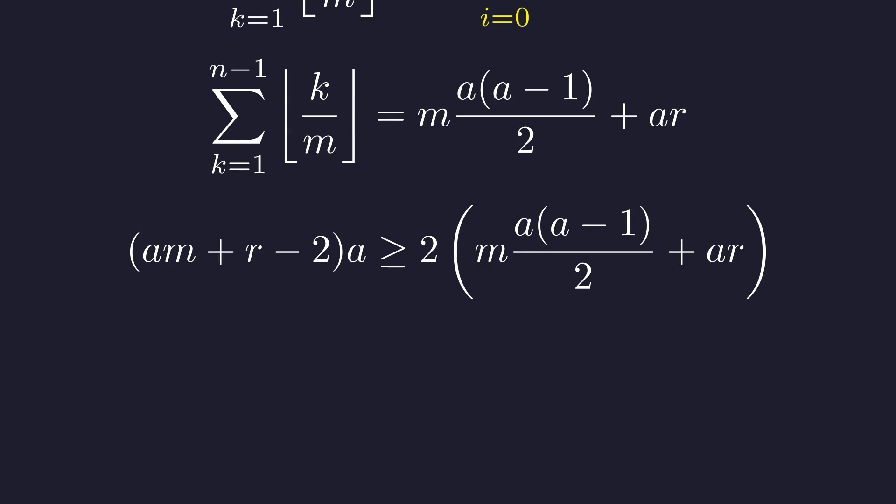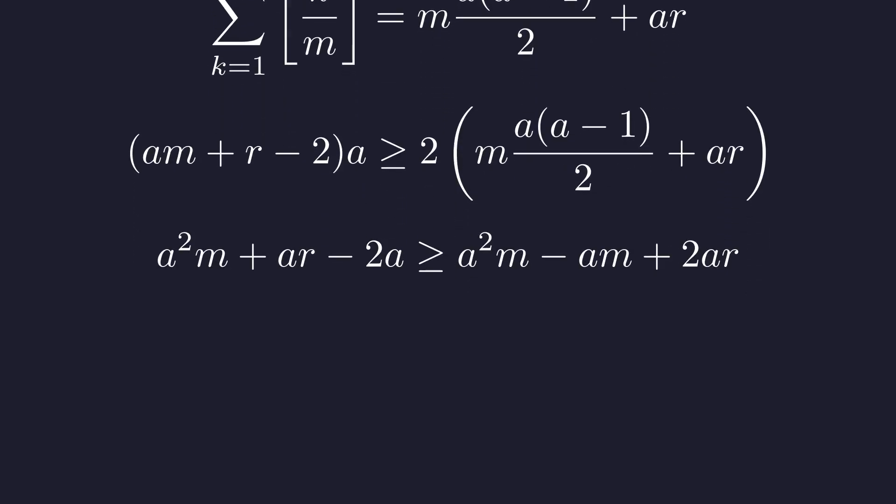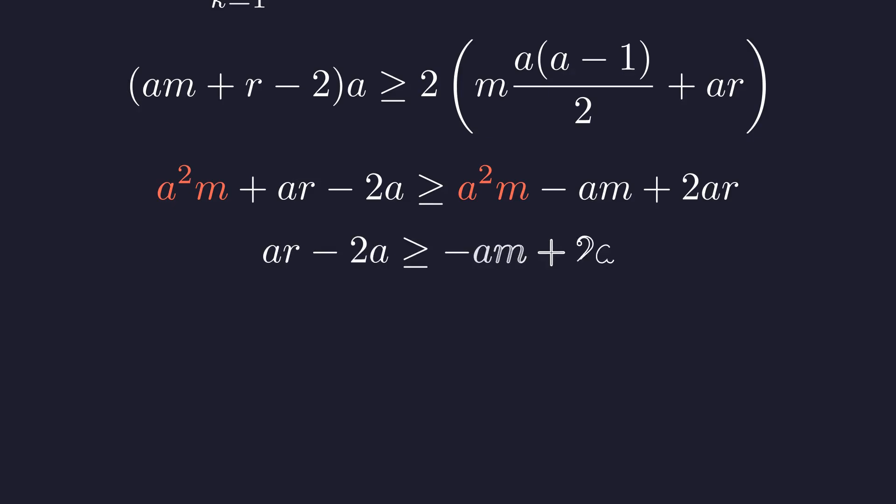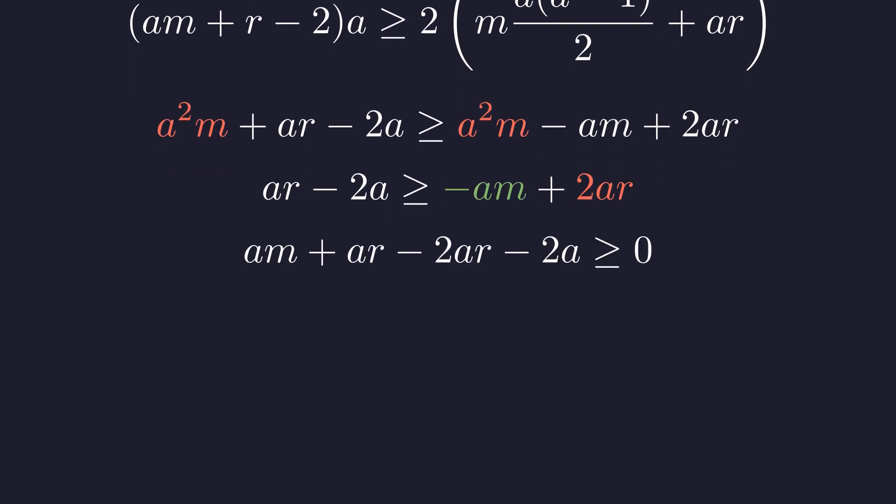But don't worry, it's about to simplify beautifully. Time for some algebra magic! When I expand both sides, look what emerges: we have some terms that are begging to be cancelled. The a squared m terms cancel out perfectly, and we're left with something much more manageable. Let me gather all the terms on one side. Now everything's on the left side. I can combine these r terms. After simplifying, we get this clean form that's ready for factoring. And now I can pull out the common factor of a. Beautiful! Our complex inequality has boiled down to this simple form: a times the quantity (m minus r minus 2) greater than or equal to 0.